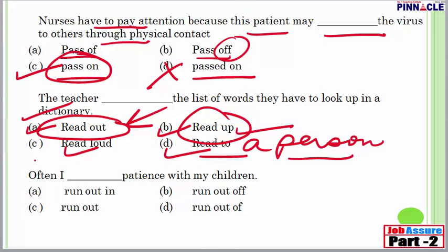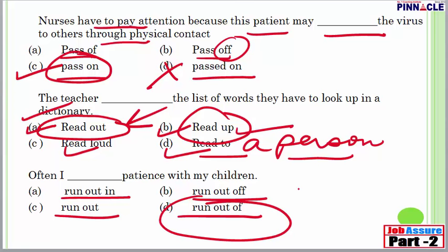'Often I ___ patience with my children' — options: 'run out in,' 'run out,' 'run out of.' 'Run out of' means something has fallen short. The correct answer is 'run out of patience.' You will find plenty of phrasal verb blanks in your cloze tests. To summarize: if the blank is grammar-based, apply grammar rules; if vocabulary-based, use vocabulary knowledge; if the sentence seems complete without the blank, look for a modal, emphasis word, or adverb.